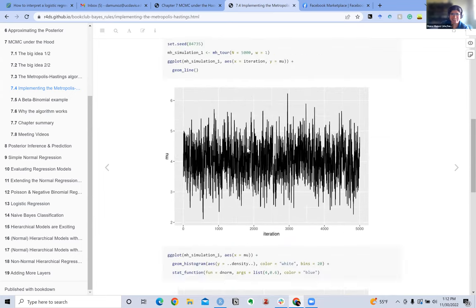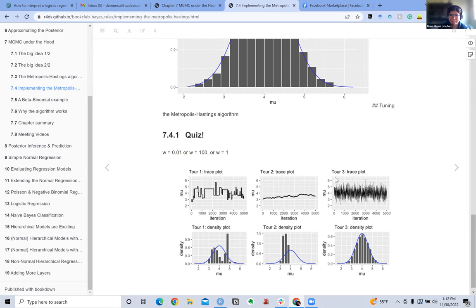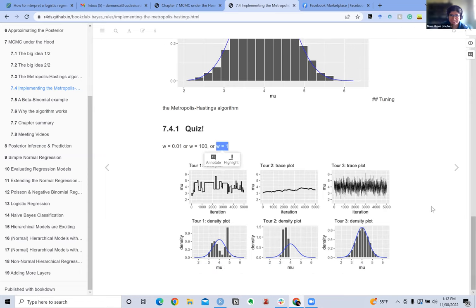They mentioned that getting the half-width right is sort of like a Goldilocks situation where it can't be too small, can't be too big, it has to be just right. They offered us these different pathways so we could think about what sorts of Markov chains these would produce.